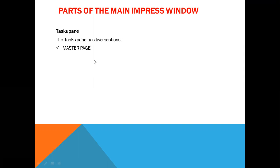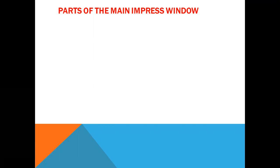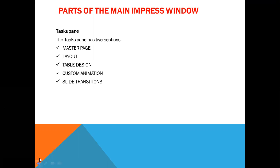The five sections are: the first is the Master Page, the next is the Layout, then Table Design, Custom Animation, and Slide Transition. We are going to talk about each of these five sections in the Task Pane.